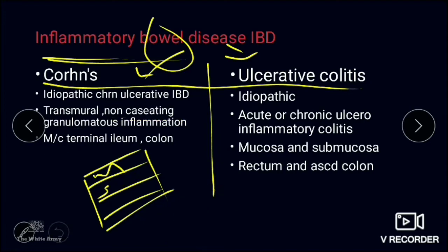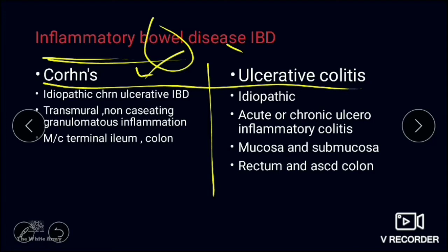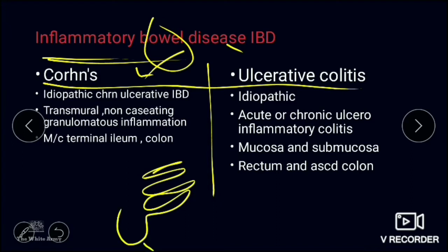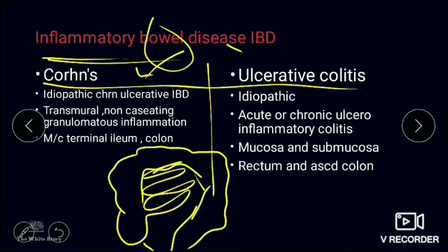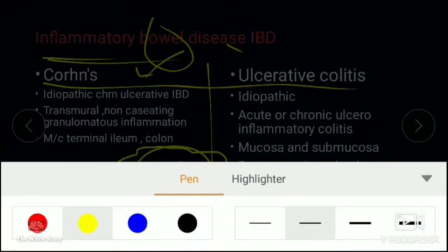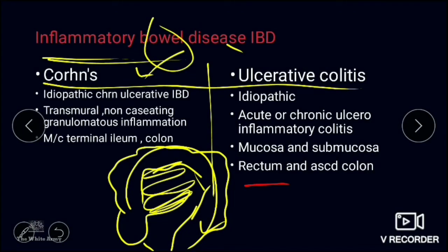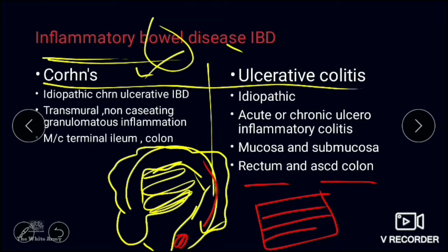Crohn's disease is more commonly seen in the terminal ileum and colon. Looking at the diagram, this includes the cecum, appendix, ascending colon, transverse colon, descending colon, sigmoid, and rectum. Ulcerative colitis, by contrast, is more common in the rectum and ascending colon, and involves only two layers: mucosa and submucosa, not all four layers.